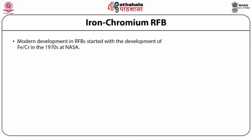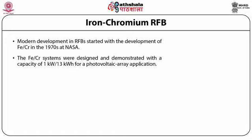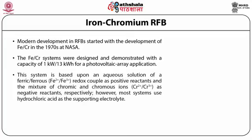Iron-chromium RFB: modern development in RFBs started with the development of iron-chromium in the 1970s at NASA. A schematic of iron-chromium RFB has been shown in the figure. The iron-chromium systems were designed and demonstrated with a capacity of 1 kilowatt, 13 kilowatt-hour for a photovoltaic array application. This system is based upon an aqueous solution of ferric or ferrous (Fe2+ or Fe3+) redox couple as positive reactants and the mixture of chromic and chromous ions (Cr2+ or Cr3+) as negative reactants respectively. Most systems use hydrochloric acid as the supporting electrolyte.